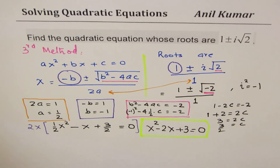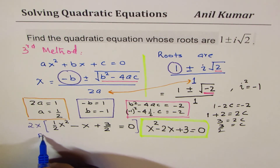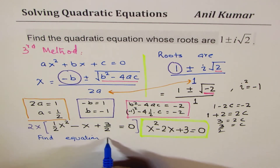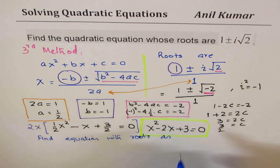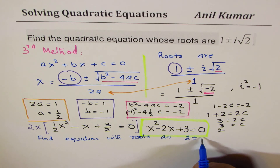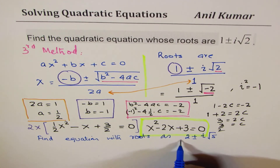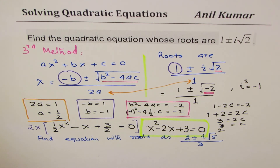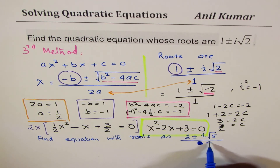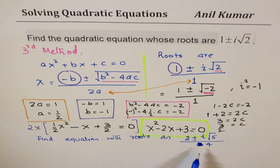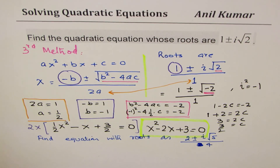Here is a practice question for you: find the quadratic equation with roots (2 ± i√5) / 3 — or let's make it (4 ± i√5) / 3. I hope you understand and appreciate all three methods discussed in this video. Feel free to write your comments and share your views. Thanks for subscribing and liking my videos — thank you and all the best!